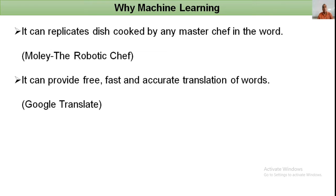Machine learning can provide free, fast, and accurate translation of words. When you travel to a place where you don't know the local language, you may have trouble understanding directions. Using Google Translate, the language is translated into your mother tongue, helping you communicate with people who don't know your language. Google Translate also works on machine learning techniques.